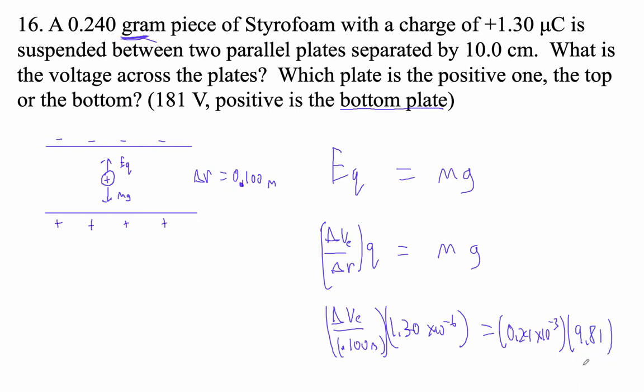Okay, so I'm going to go 0.24 E minus 3 times 9.81. And then let's see, I guess I divide by 1.3 E minus 6 and multiply by 0.1. And I get 181, so our delta is 181.1 volts, or 181 volts.